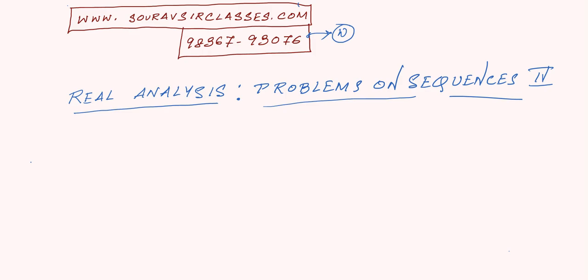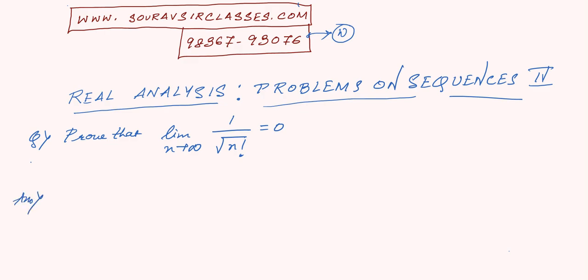Alright, so let's get straight to the problem. We have the question: prove that the limit as n tends to infinity of 1 by root over n factorial is equal to 0. Let f(n) be equal to 1 by root over n factorial.